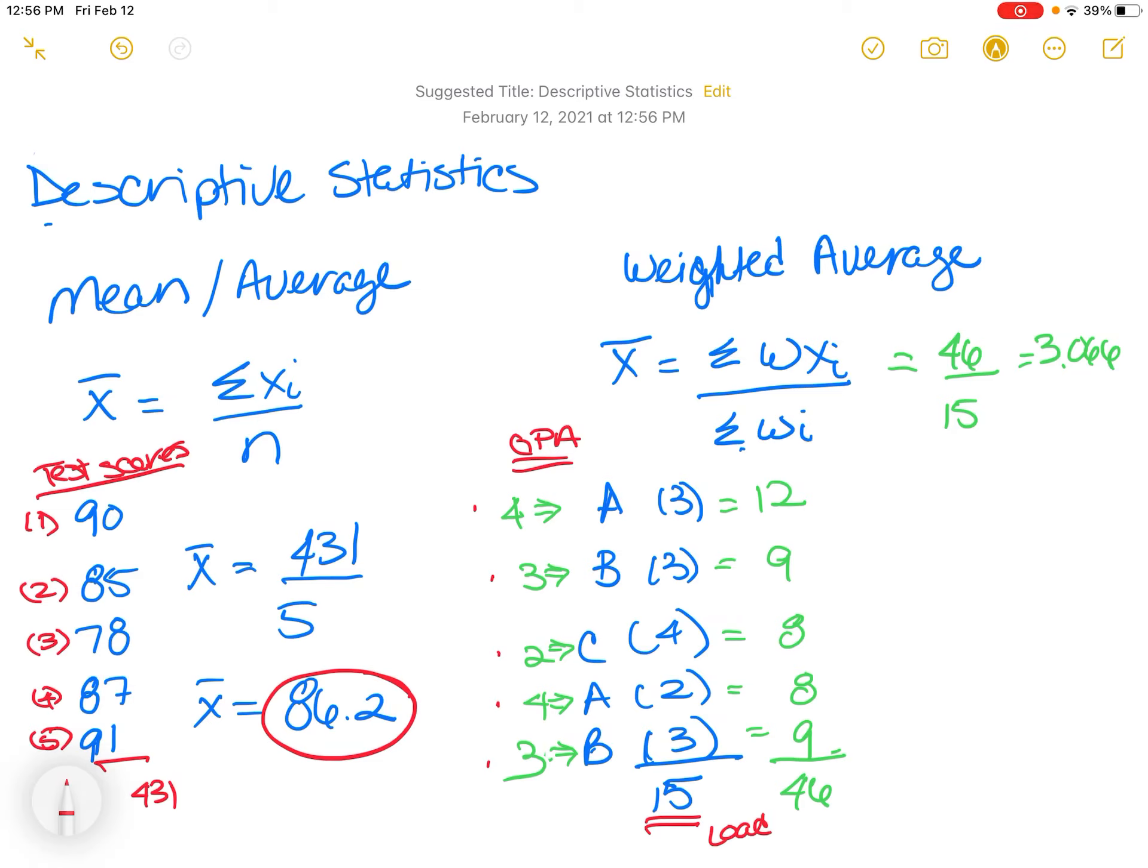So when we talk about the weighted average, now let's talk about what this means. So if you look at this formula, W times X, so that's the weight. So your weight is going to be your grade, so that's your W. And then your X is the points for the class. So we'll say this is X right here.